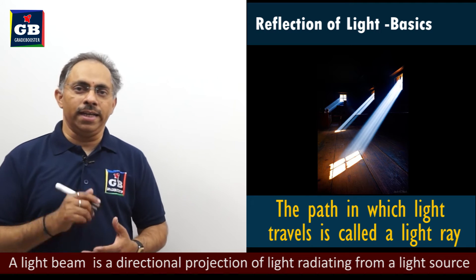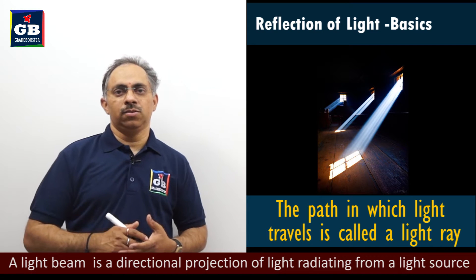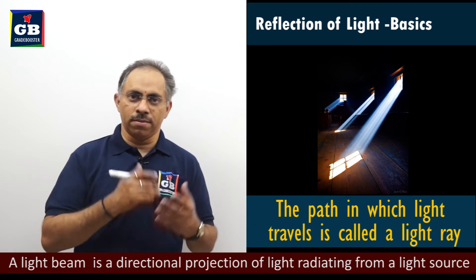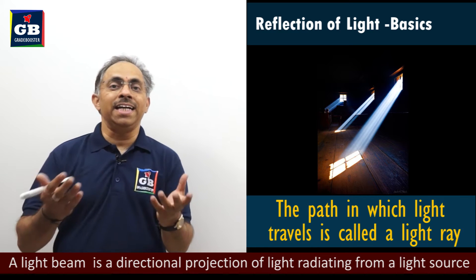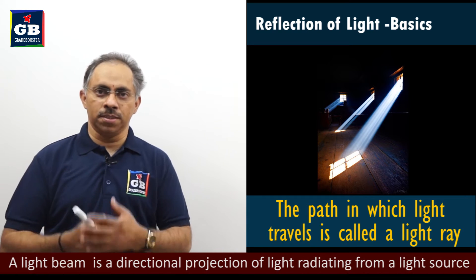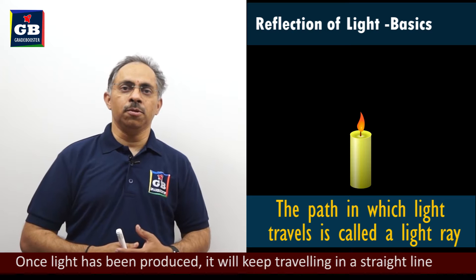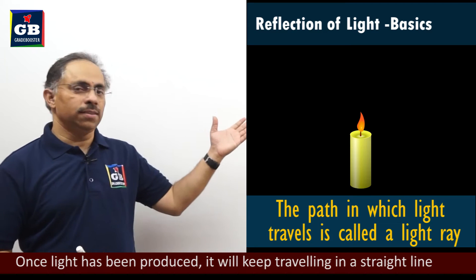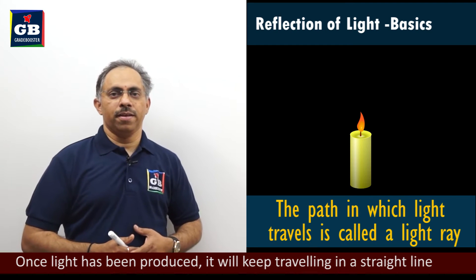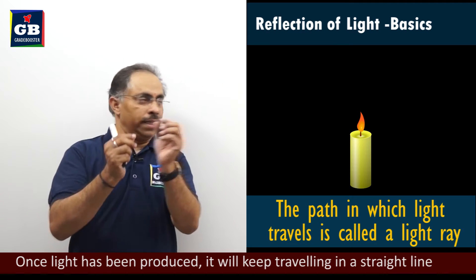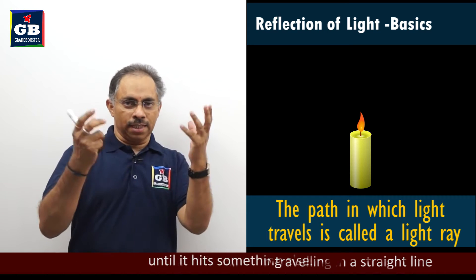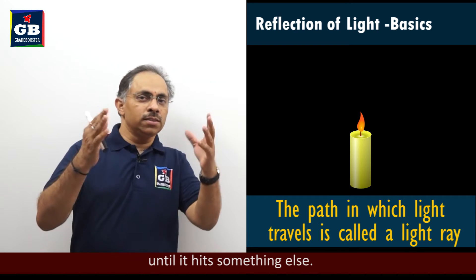So basically light ray is a path along which light travels through. Now, what are the different kinds of light rays what we can observe? Suppose, see here, this is a candle over there. Now, in this candle, you are seeing that it is switched on and light is emanating. Light goes in all directions.